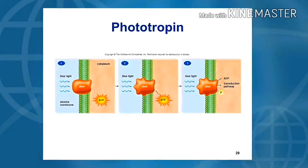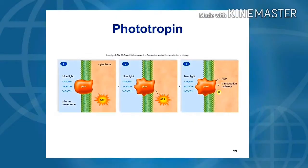As displayed on page 486 of your textbook, blue-light wavelengths are absorbed by the pigment portion of the photo-receptor called FOT. When FOT absorbs blue-light wavelengths, it changes shape and transfers a phosphate molecule from ATP to the protein portion of the photo-receptor. The phosphorylated photo-receptor then triggers an induction pathway leading to the entry of ions, which eventually leads to the bending of cells.